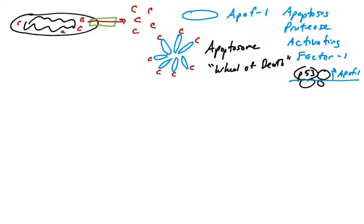The apoptosome is a protease — an enzyme that cleaves proteins. Do not confuse the apoptosome, which is a protease, with the proteasome. The proteasome is also a large multi-subunit complex found in cells that degrades proteins, but those are ubiquitinated proteins. When a protein has polyubiquitin tails attached, it is sent to the proteasome for degradation. The apoptosome is a different complex — a protease that we're only going to discuss as having one substrate.